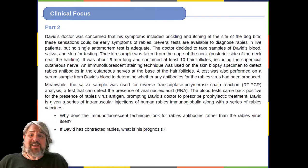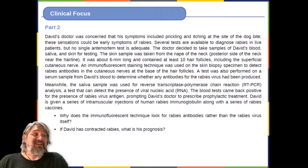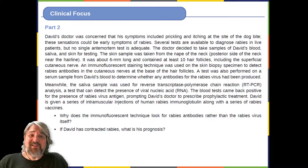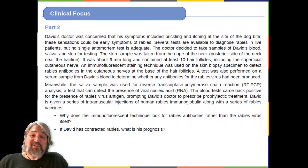Clinical Focus Part 2: David's doctor was concerned that his symptoms included prickling and itching at the site of the dog bite—possible early symptoms of rabies. Several tests are available to diagnose rabies in live patients, but no single ante-mortem test is adequate. The doctor took samples of David's blood, saliva, and skin. The skin sample was taken from the nape of the neck and contained at least 10 hair follicles, including the superficial cutaneous nerve. An immunofluorescent staining technique was used on the skin biopsy to detect rabies antibodies in the cutaneous nerves at the base of the hair follicles.